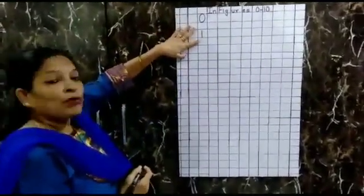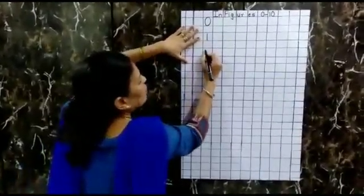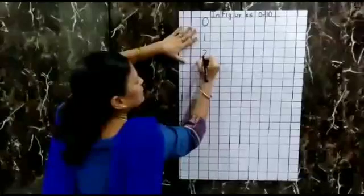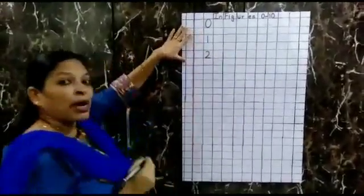And after 1, what number comes? 2. Yes. Draw a curve, slides, slanting line and a slipping line. That makes number 2.